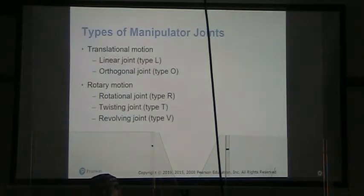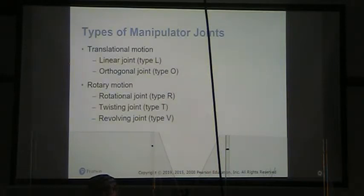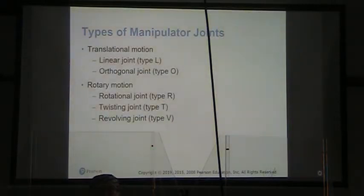What are the types of manipulator joints? We might have a linear joint, type L. We may have an orthogonal joint, type O. For rotary motion we have a rotational joint, type R. A twisting joint, type T. And a revolving joint, type V.